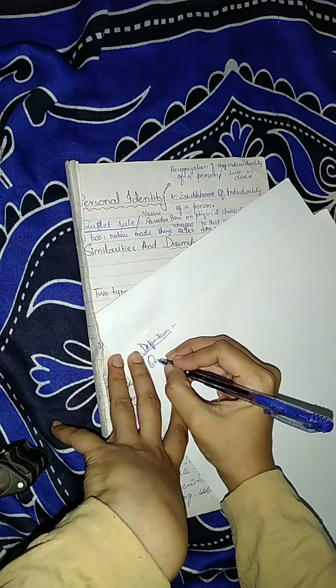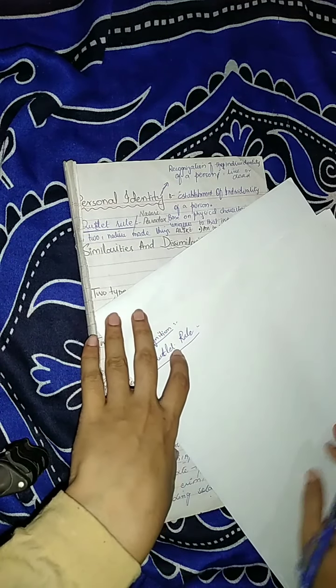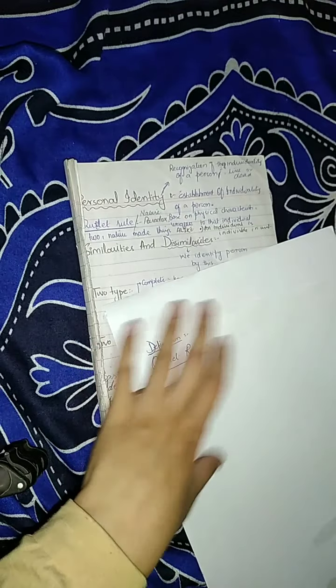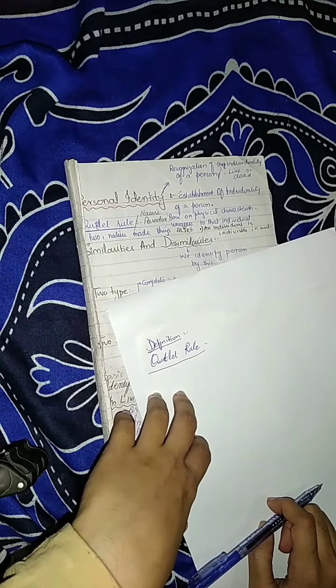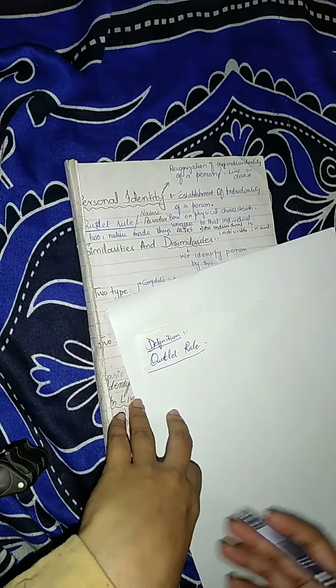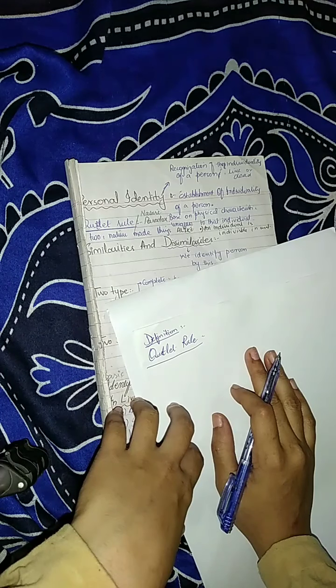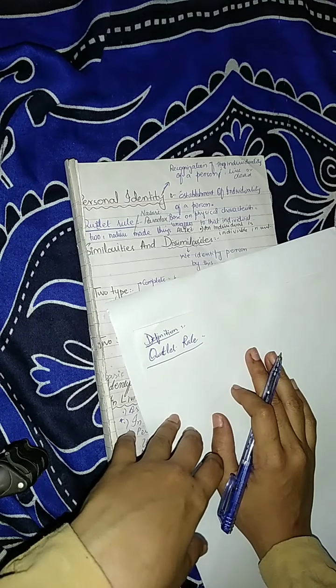This is called cutlet rule. According to this rule, it is called nature paradox. No two natural things are similar. Even identical twins, there are so many researches that show when they are the same, their intellectuals and habits are different. Nature-made things are unique and there is no other thing like them.